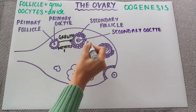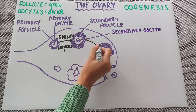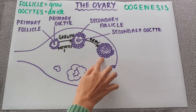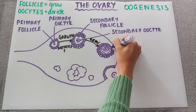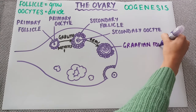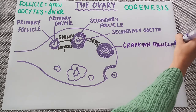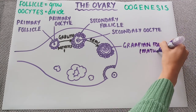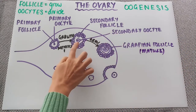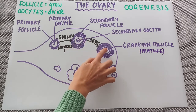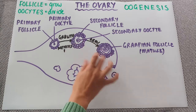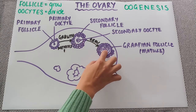The follicle will continue to grow and become this third structure here, which is called a Graafian follicle, which can also be referred to as a mature follicle. This is still containing a secondary oocyte — there's been no further division to form this structure. With a Graafian follicle it has grown, so it's a bit bigger, but it also now has this fluid-filled section in the middle.